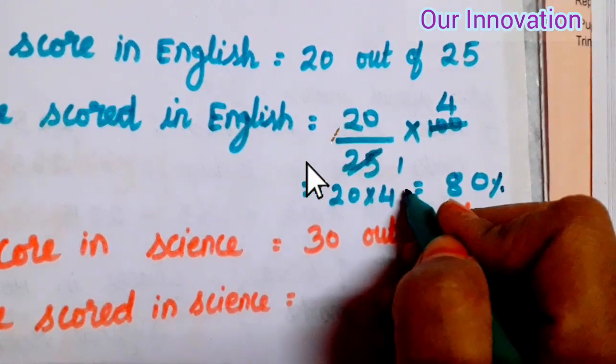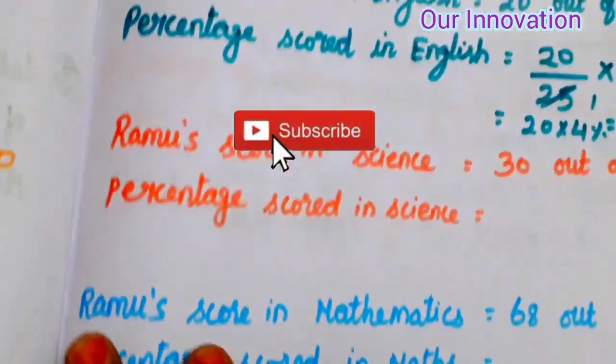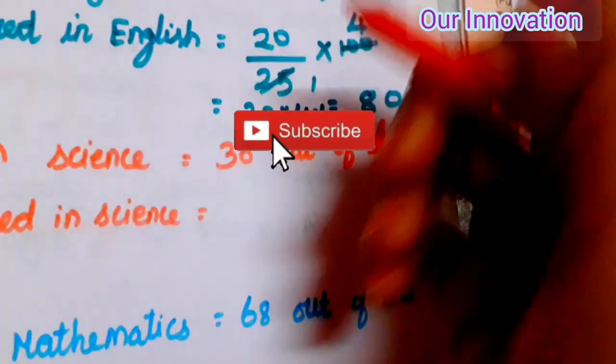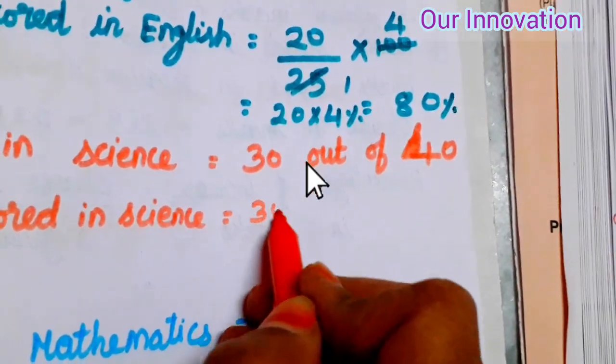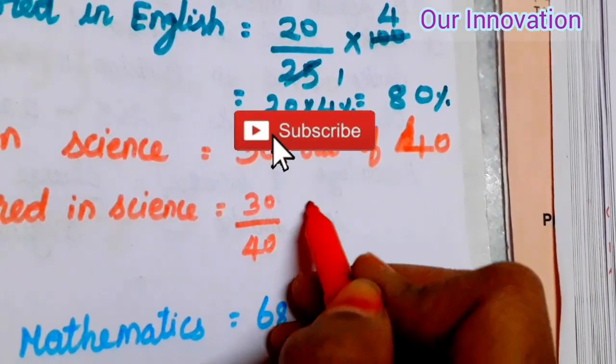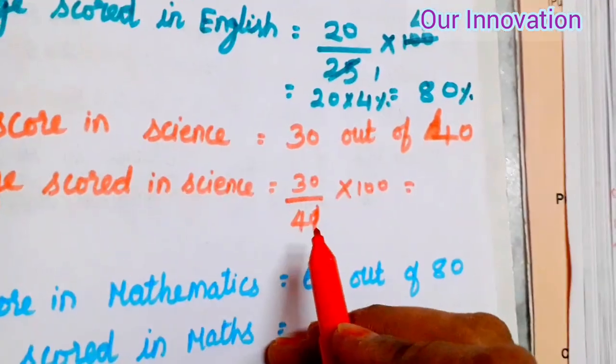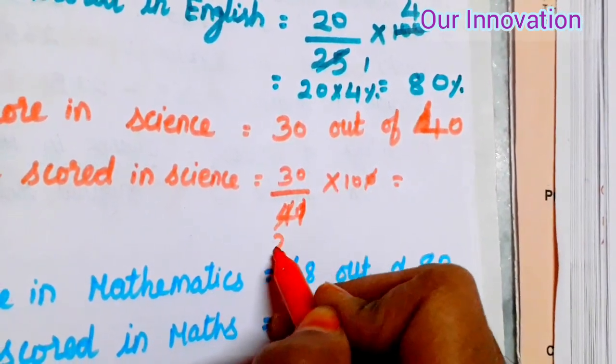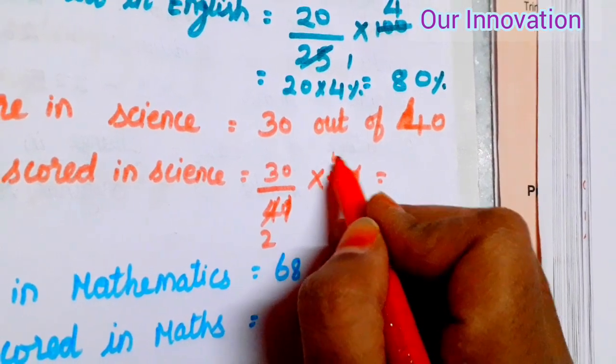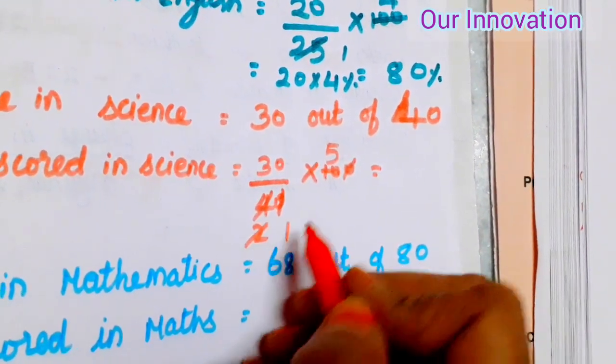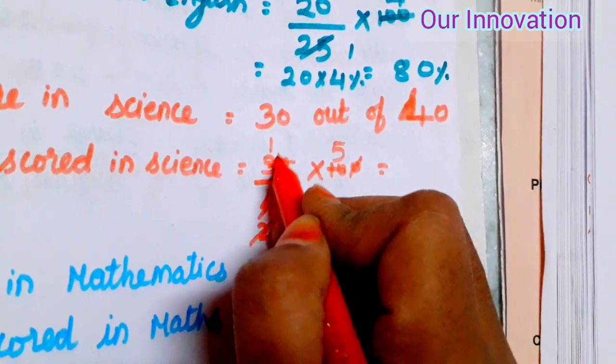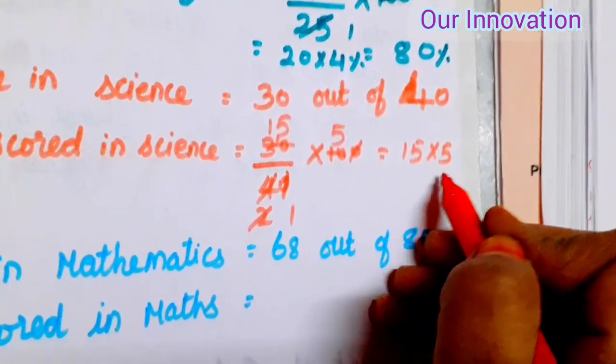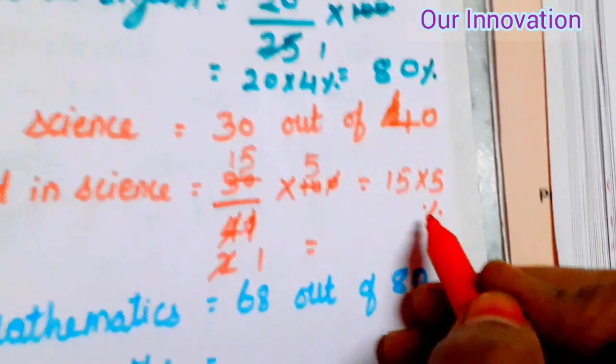25 into 4, so 4 into 20. Multiply: 20 into 4 is equal to, 4 into 0 is 0, 4 into 2 is 8, equals 80 percentage.